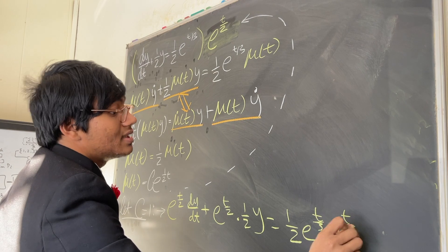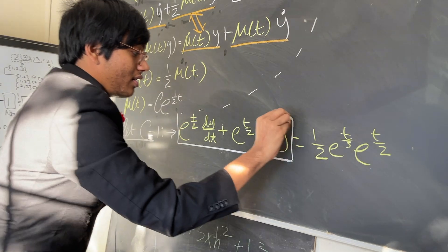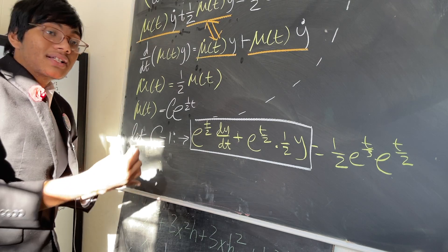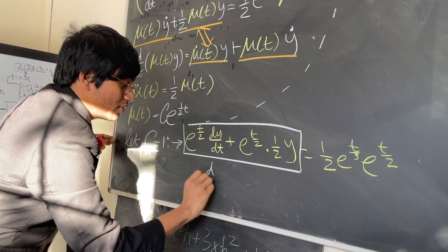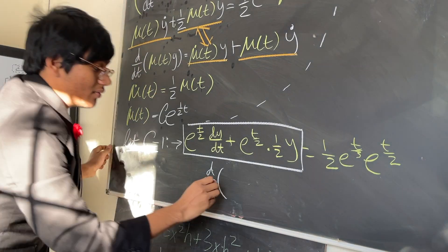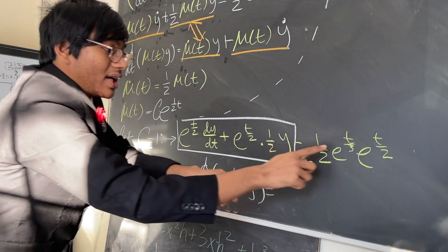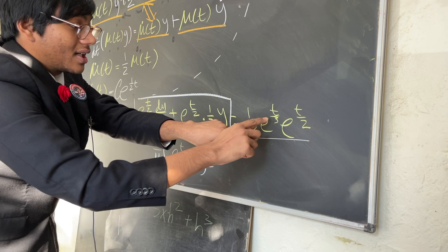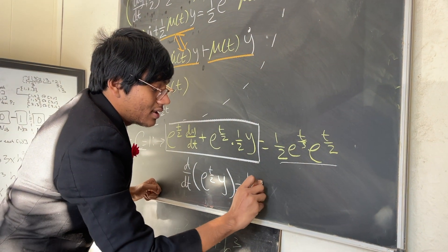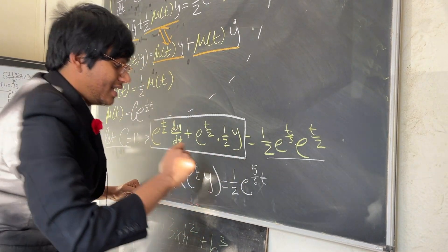Is equal to e to the half, e to the t over 3 times e to the t over 2. Now by construction, this sum over here is the exact same as this. That's how we constructed mu of t. So we can replace this by d/dt of, now we know what mu of t is, right? We can write e to the t over 2 times y is equal to, on the right hand side just simplify. This basic fractions, t over 3 plus t over 2 is going to give you, well, let's do the math, you're going to get 5 over 6 t.